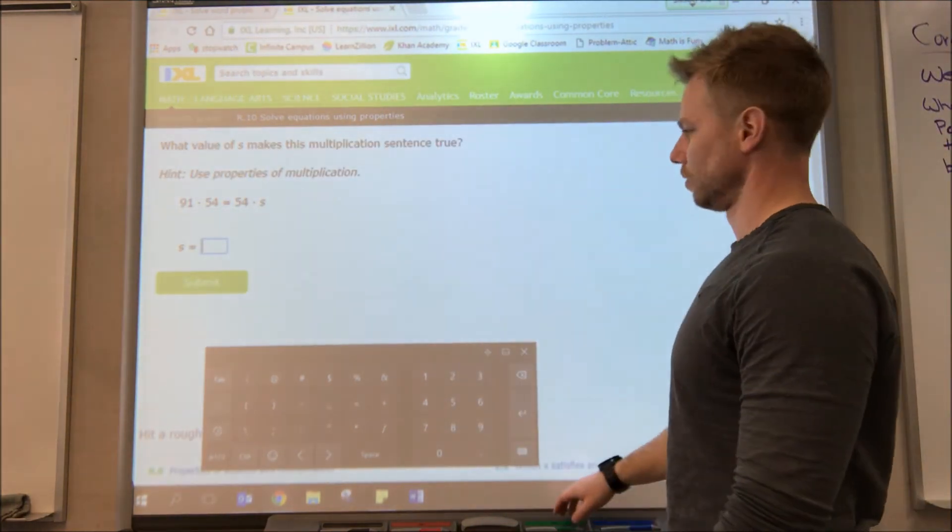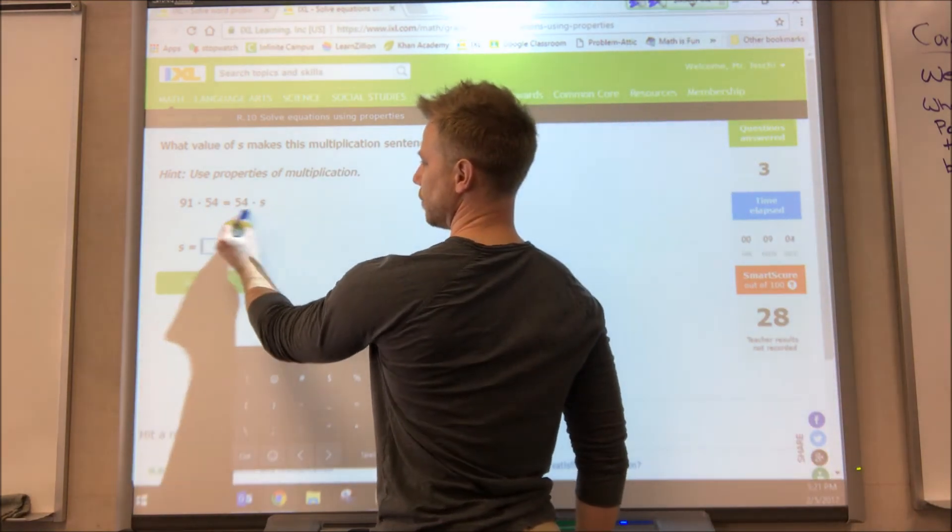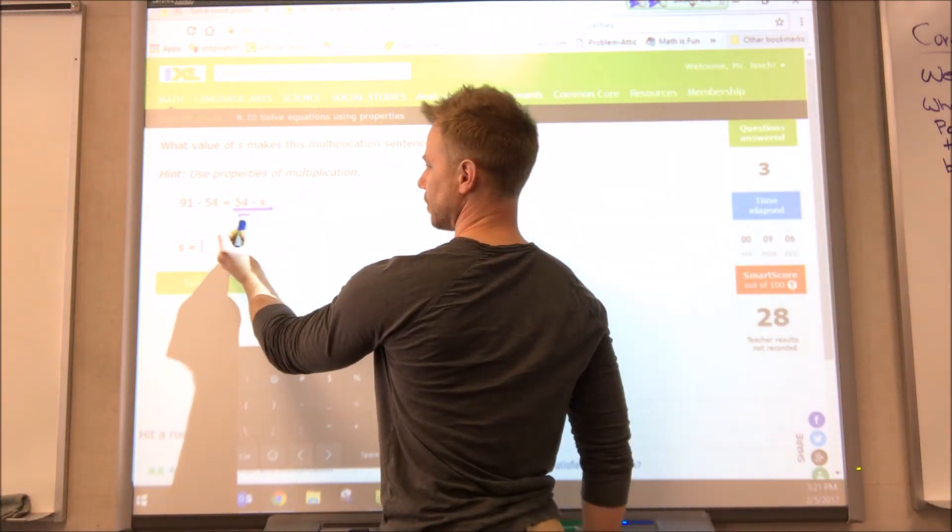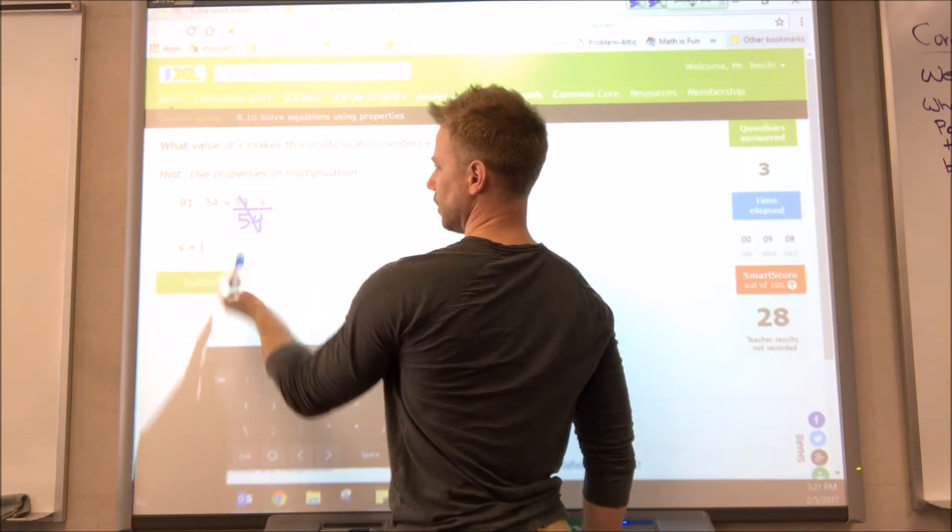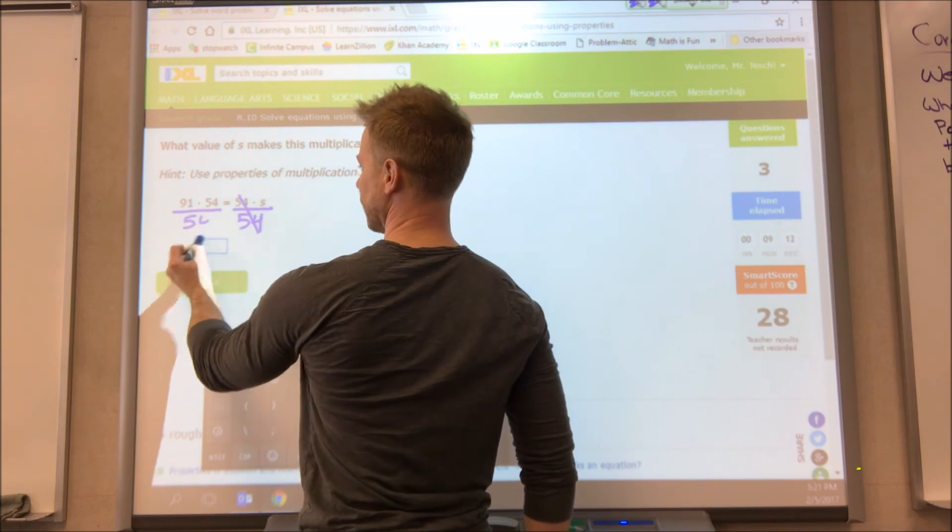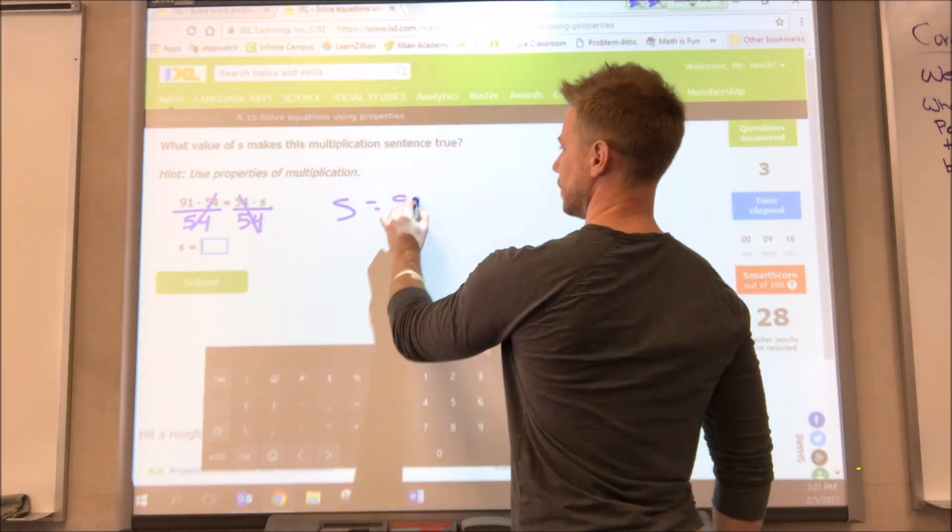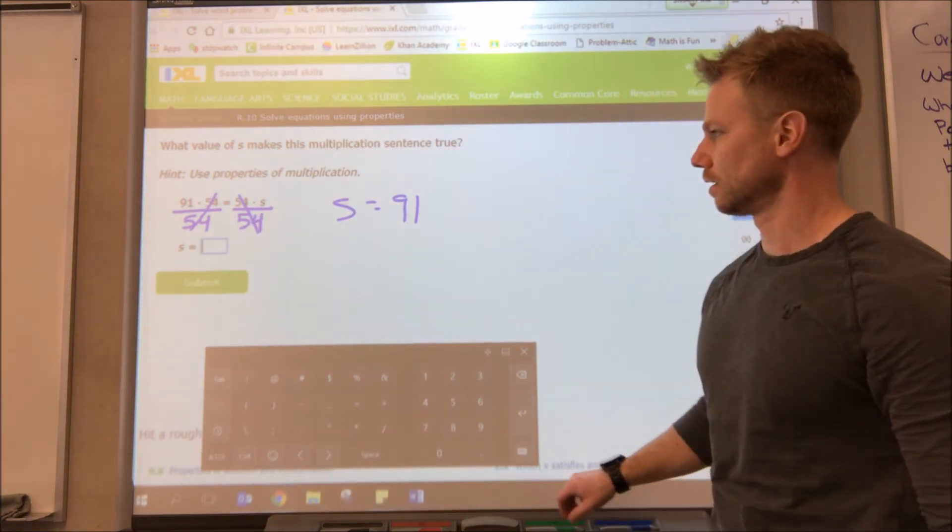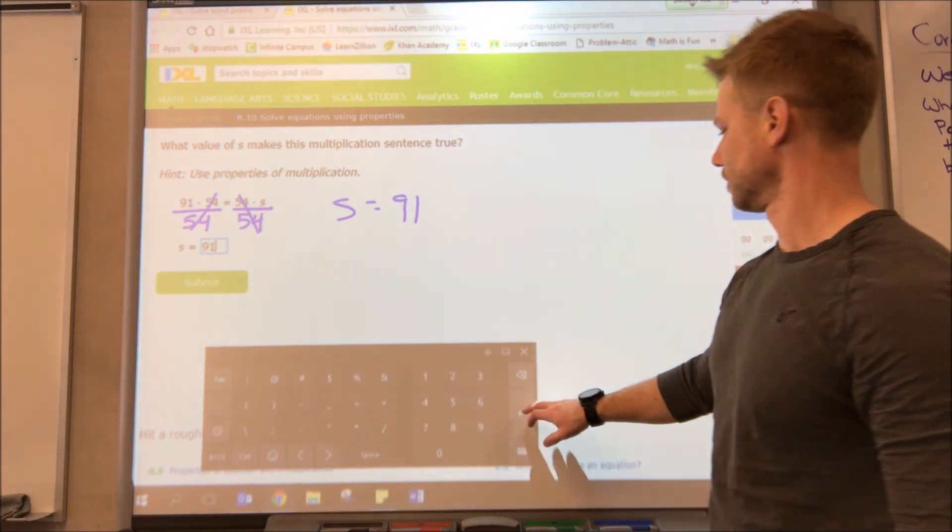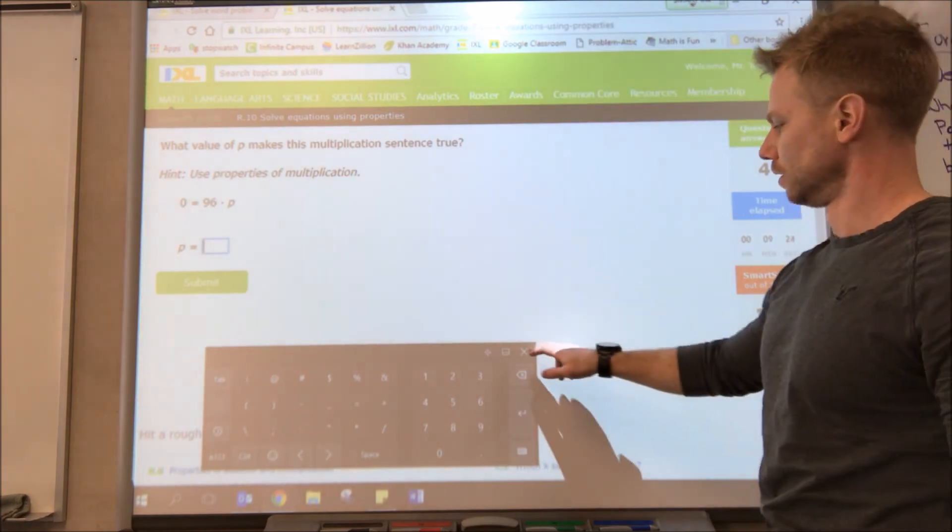All right, let's try this one. We have a 54 on each side, we want to get s by itself. It's being multiplied, so we'll do the opposite of that, which is division. Divided by 54, what you do on one side you have to do on the other side. Divide by 54, those cancel, and s equals 90.